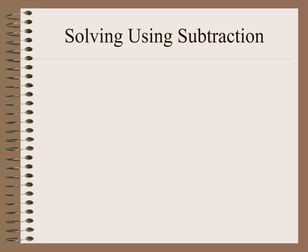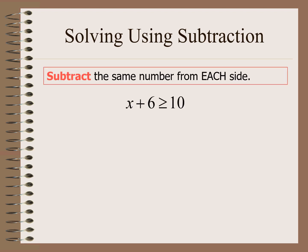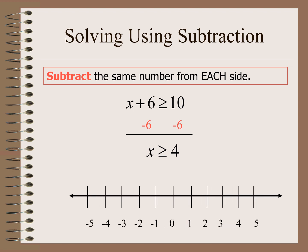Now we are going to solve an inequality using subtraction — subtracting the same number from each side. Given x plus 6 is greater than or equal to 10, we subtract 6 from each side. On the left side we have x, and 10 minus 6 is 4, so x is greater than or equal to 4. If we graph it, we use a solid or closed dot and the arrow points to the right.